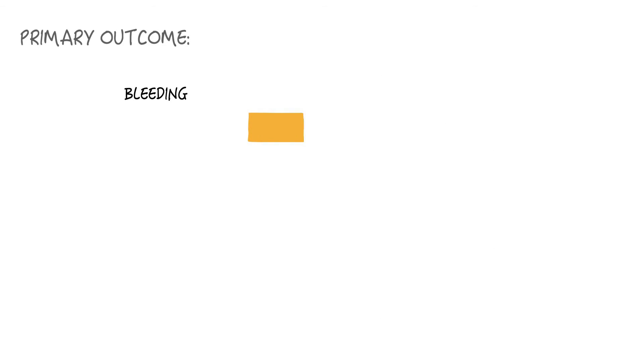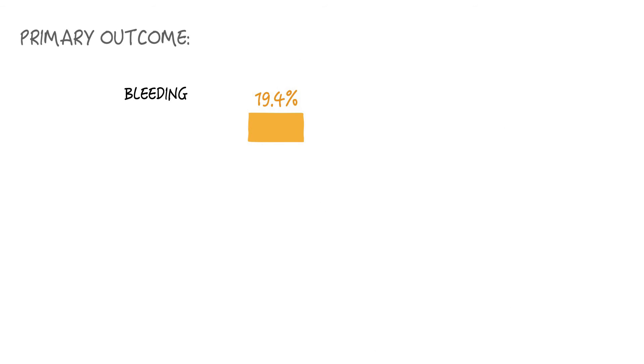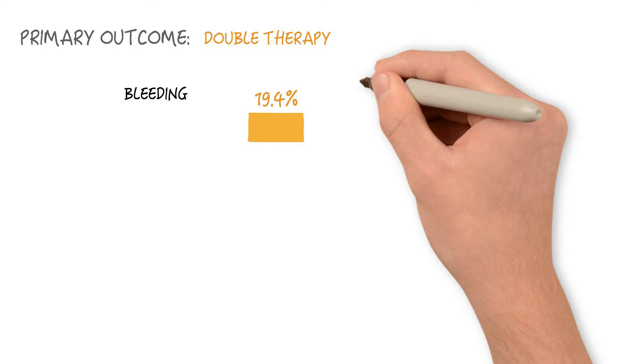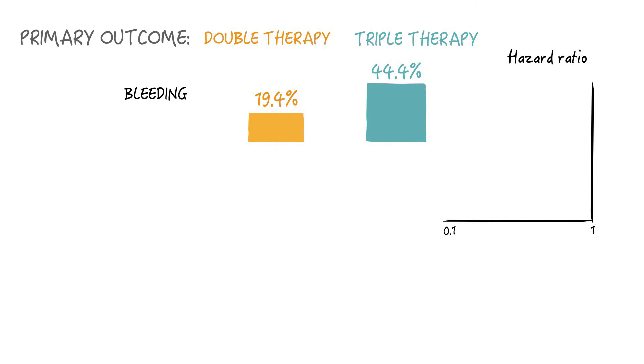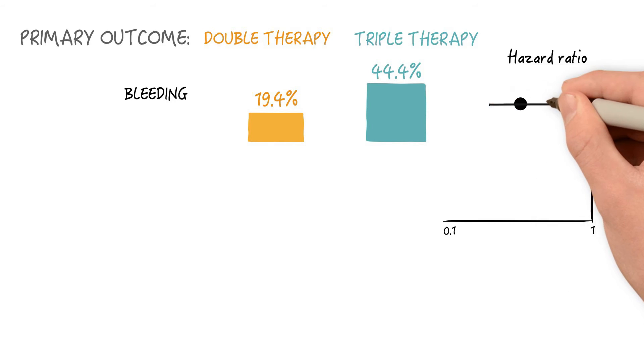Let's have a look at the primary outcome of bleeding first. So any bleeding occurred in 19.4% of patients in the double therapy group and in 44.4% of patients in the triple therapy group. The associated hazard ratio which compares the rates in the double therapy group to those in the triple therapy group was 0.36. You can see that the confidence intervals do not cross the value of 1, which means that this result is statistically significant.